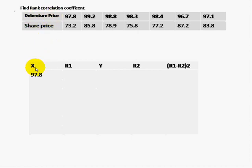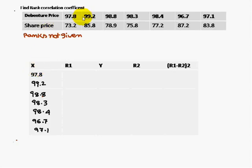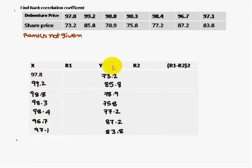The debenture price has been taken as the x column. All the values are written column-wise: 97.8, 99.2, and so on up to 97.1. The aim is to assign ranks to this data. Similarly, the y values — that is, the share price — are also written out.